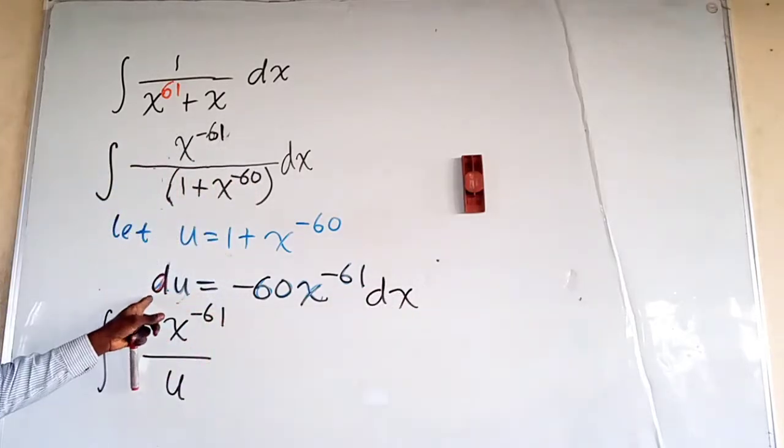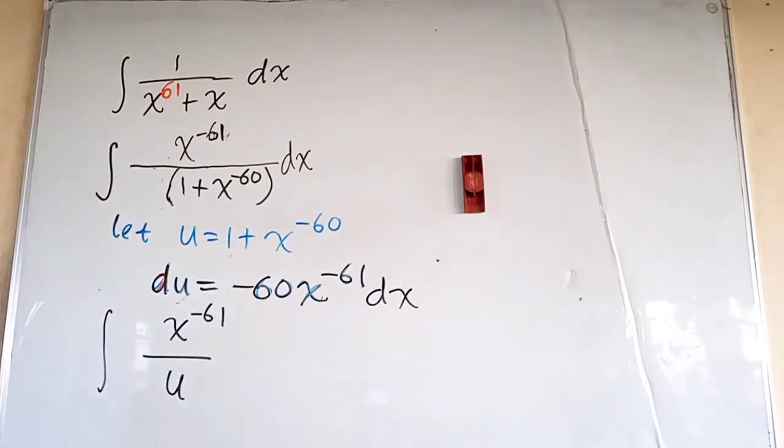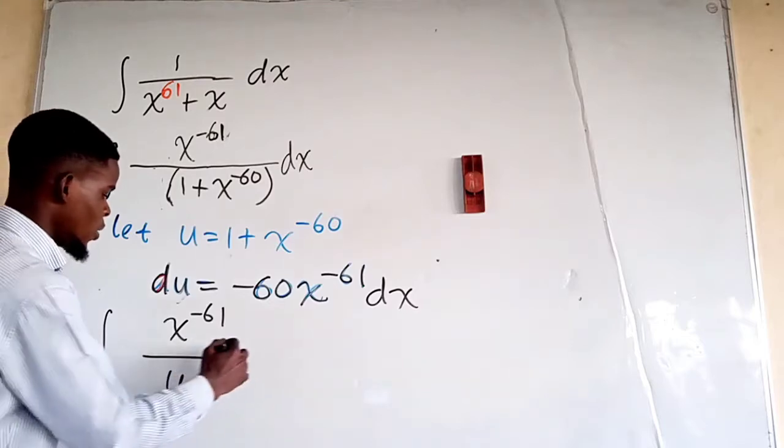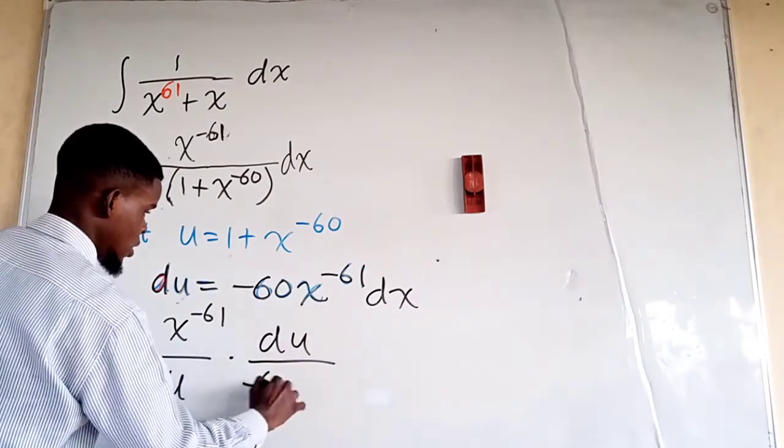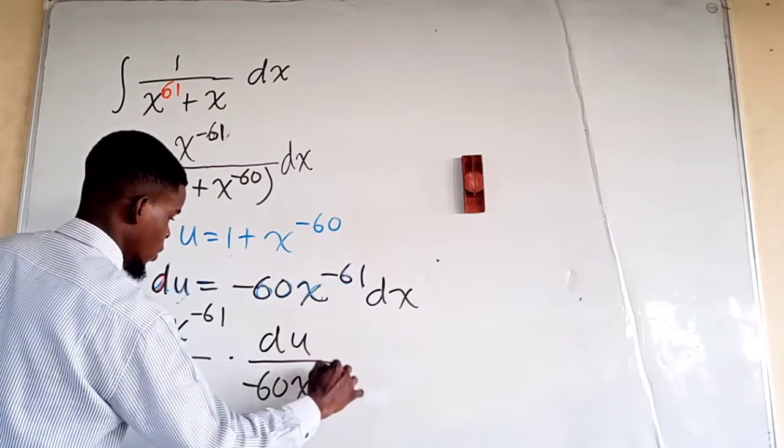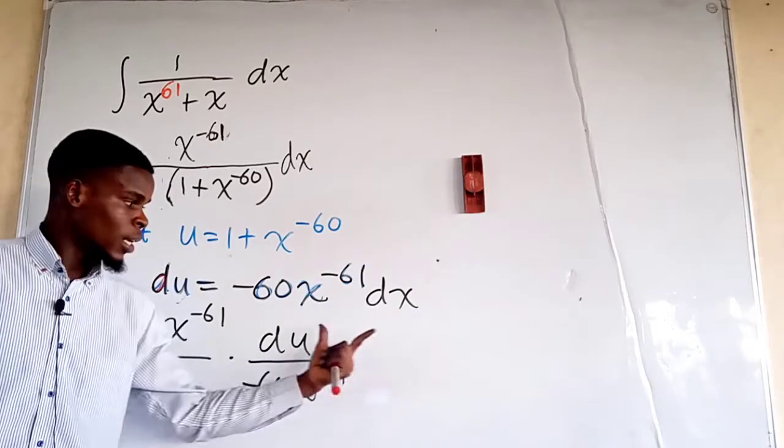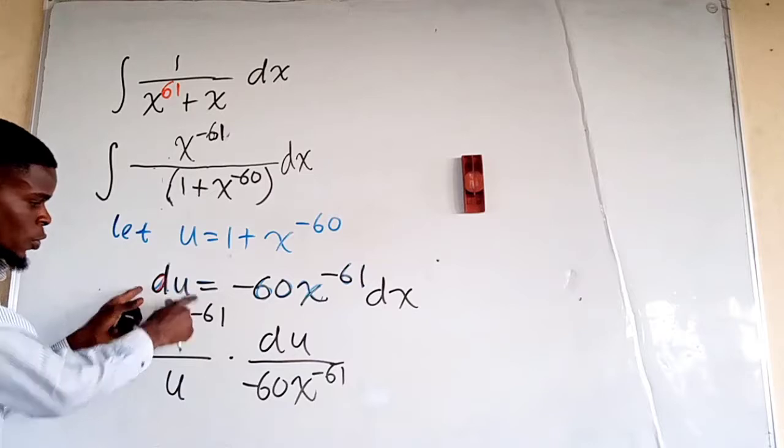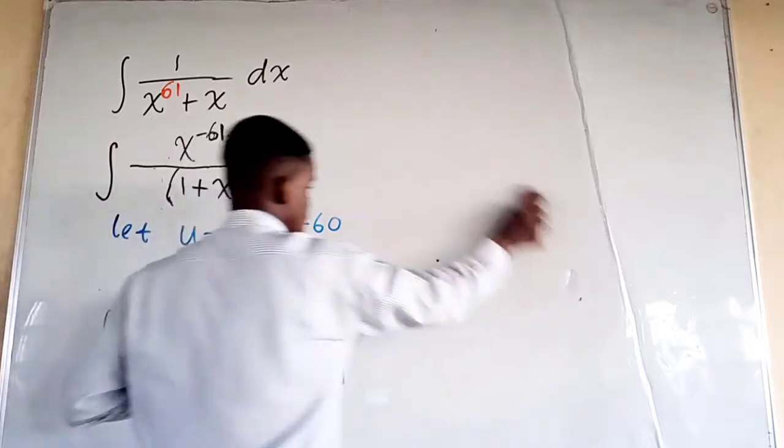You know when you differentiate u with respect to x you are going to have this, so you multiply both sides by dx. So in place of dx we are going to put down du over negative 60x raised to the power of negative 61. In place of dx you need to make dx subject of formula here—that would be divide both sides by this, so you have du over the whole of that.